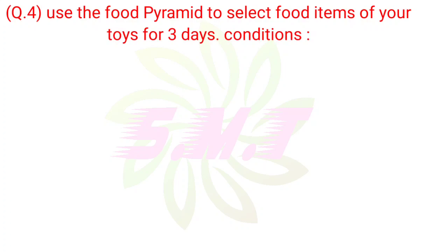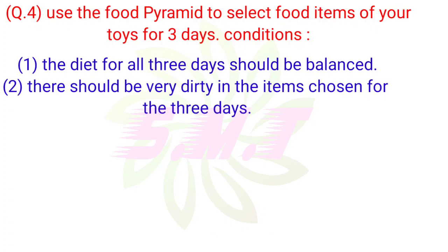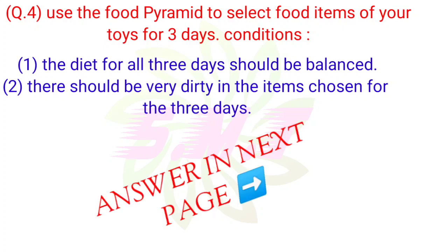Question 4: Use the food pyramid to select food items of your choice for 3 days. Conditions: 1. The diet for all 3 days should be balanced. 2. There should be variety in the items chosen for the 3 days. Answer on next page.